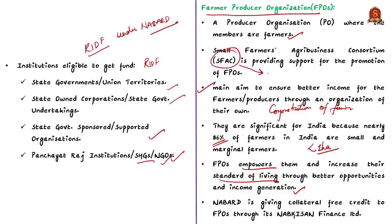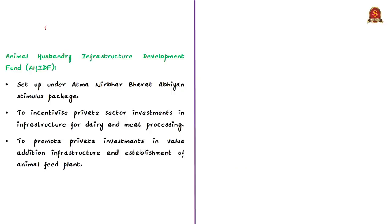It is important to know that Small Farmers Agri-Business Consortium is providing support for the promotion of FPOs. The same body is also the coordinating body for eNAM, that is National Agricultural Market. Now let us see the major reforms announced under Atmanirbhar Bharat Abhiyan. The government has come up with a 20 lakh crore package to revive the Indian economy which was severely hit by COVID pandemic. As part of this package, a few reforms are also focused on the farm sector.